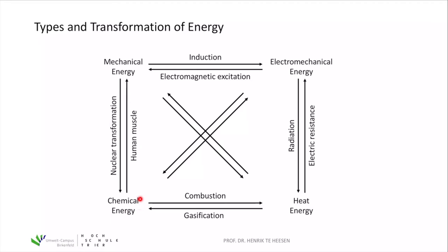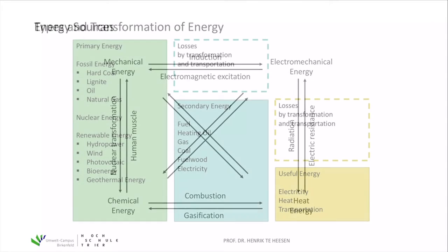Chemical energy, which is bound in molecular chemical bonds, can be released by combustion to get heat energy — burning oil in a boiler gives us heat energy from chemical energy. There are always pathways to change from one form of energy to another. For example, chemical energy can be converted to mechanical energy by muscles, so if you do sports or lift a weight, you transform the chemical energy stored in your body into mechanical energy.